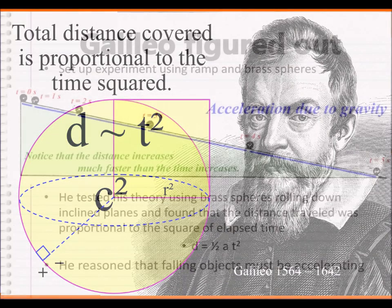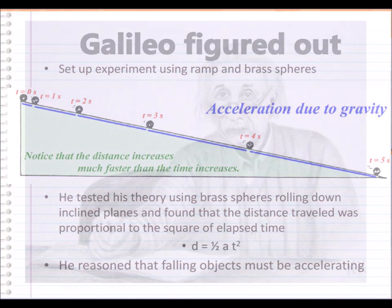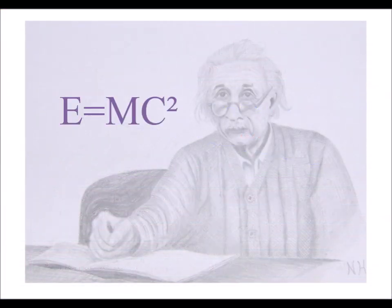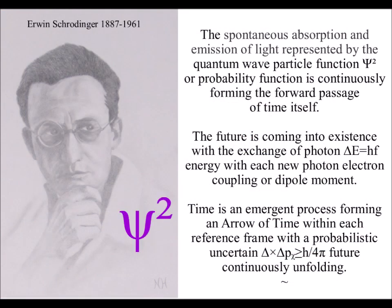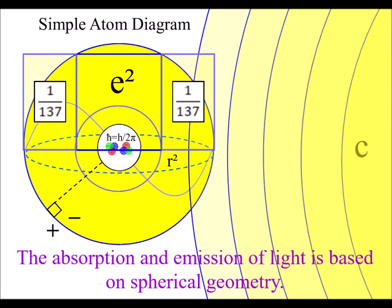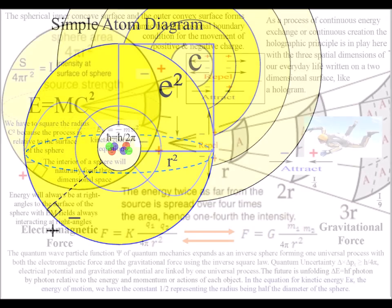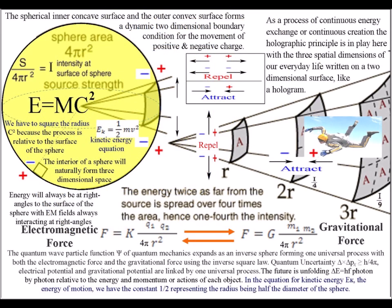We have a great similarity in the mathematics of theoretical physics with time being squared, as in the work of Galileo, and with the speed of light squared. In quantum mechanics, we have the wave function squared, forming a square of probability. The electron that represents matter is also squared. And in classical physics, in the equation for kinetic energy, velocity is squared. We also have the inverse square law that both electromagnetic and gravitational fields are based upon.